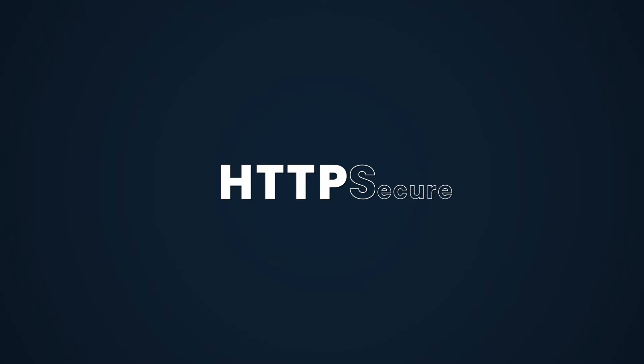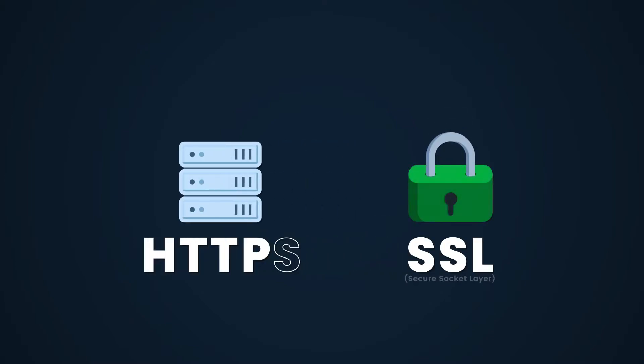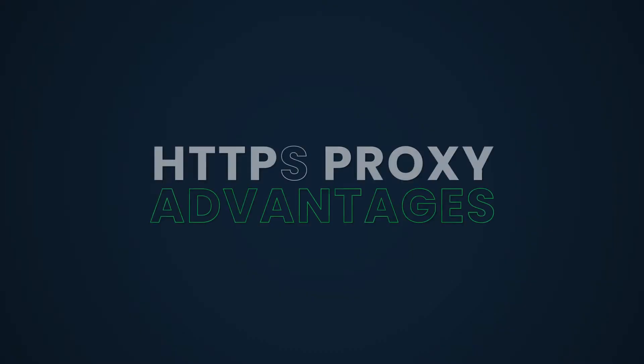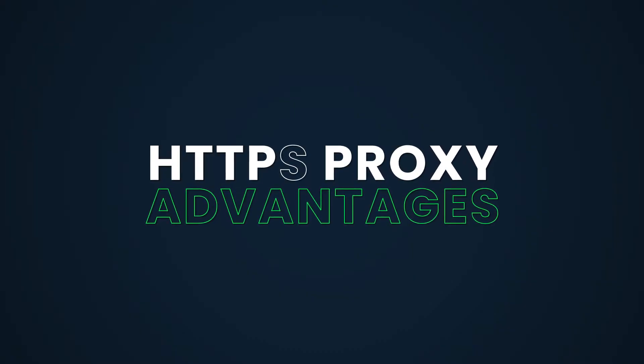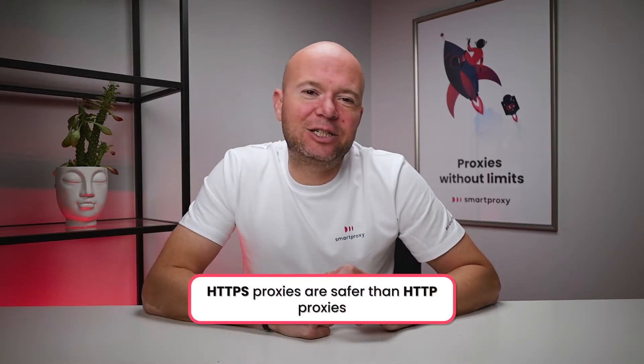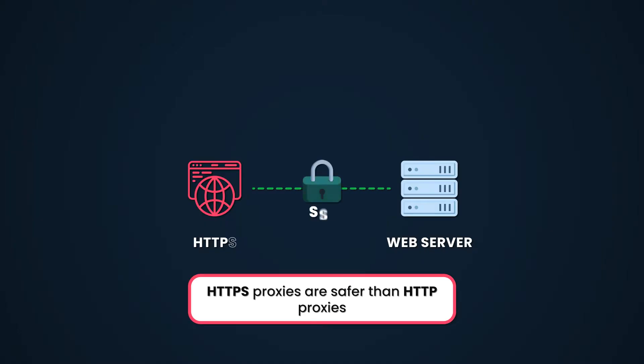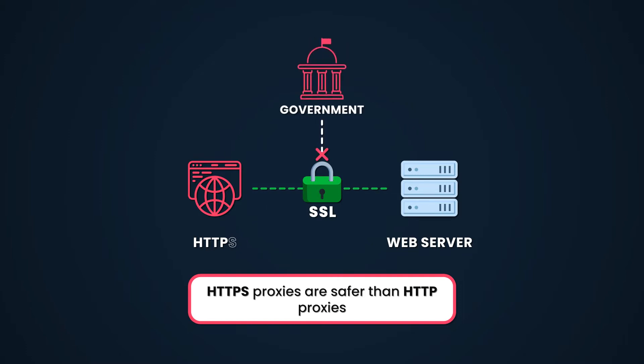HTTPS proxies, however, solve this security problem. The S at the end stands for Secure, and that's because HTTPS proxies use something called SSL, or Secure Sockets Layer. So even though at first glance that added S might seem insignificant, it hints at the increased reliability of HTTPS proxies. A proxy that uses the SSL layer for the HTTP protocol has two major advantages. First, it's safer than simple HTTP proxies. To keep others from reading your data, the SSL layer encrypts your connection, so its contents are never visible to third parties like internet service providers, hackers, or government institutions.